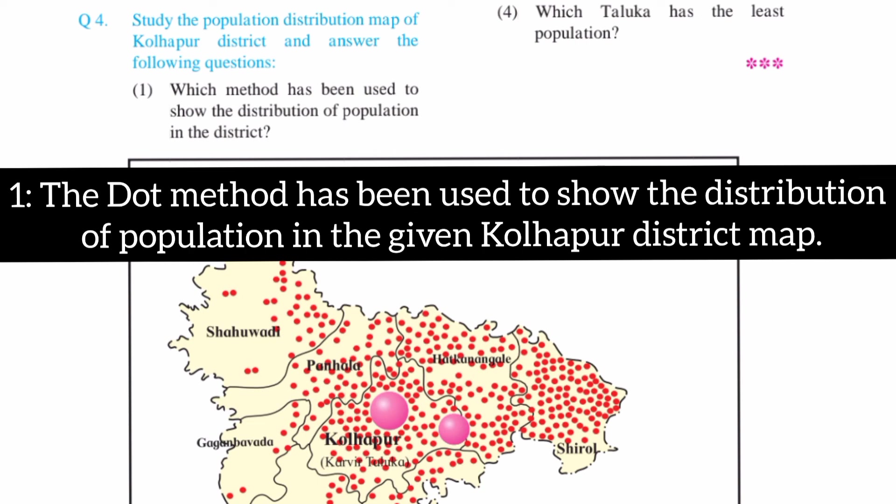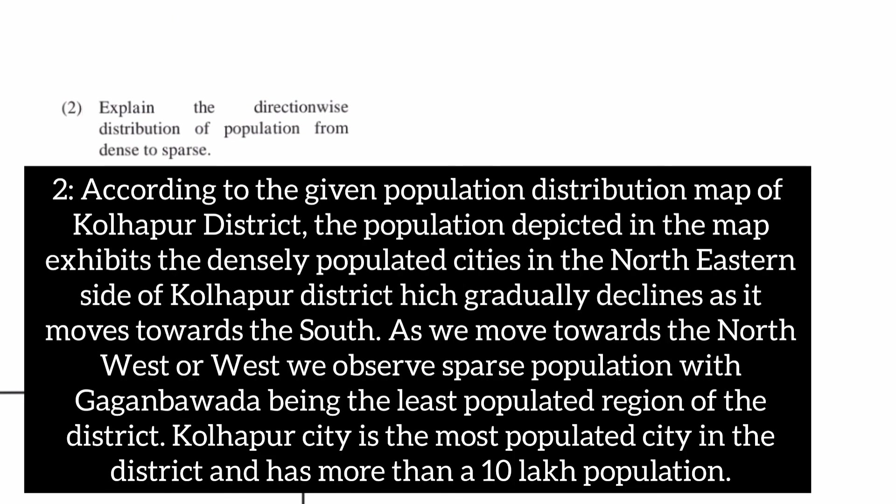Question no.4: study the population distribution map of Choropleth and answer the following questions. First: which method has been used to show the distribution of the population in the district? Second: explain the direction-wise distribution of population from dense to sparse.